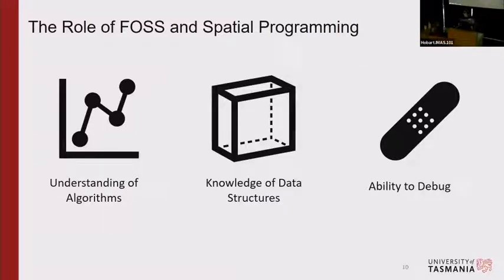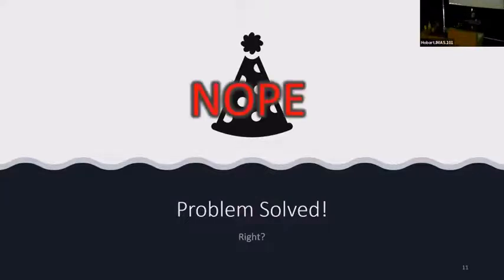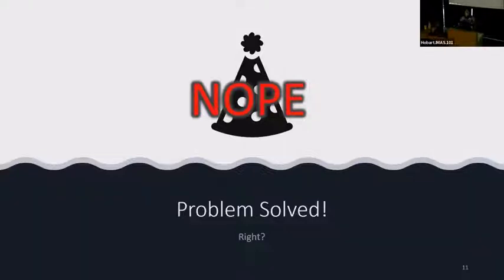Surely open source software is just the solution — all we need to do is teach students how to program as soon as they start university, show them all these open source tools and get them right into it. Surely that will fix all of our problems? No. While exposing students to these things has a lot of value, what we find is that students are absolutely terrified of them. There's a reason why proprietary software packages are industry standards and what we teach in university: they provide a certain level of comfort to people when first starting out.